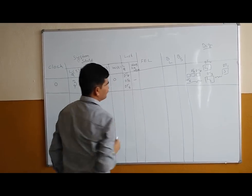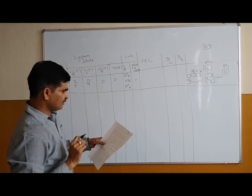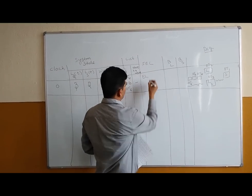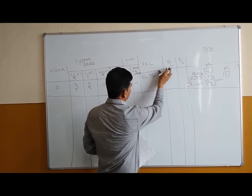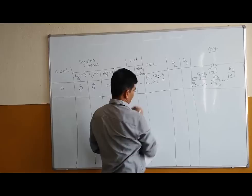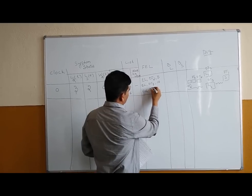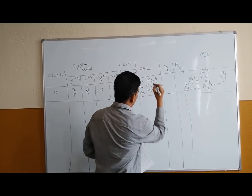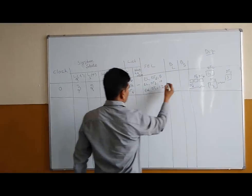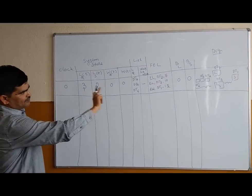The loader queue contains DT4, DT5, DT6. The weighing queue is empty at t=0. For the future event list: end loading of DT2 at t=5; end loading of DT3 at t=10; end weighing of DT1 at t=12. BL (loader busy time) at t=0 is 0, and BS (scale busy time) at t=0 is 0.